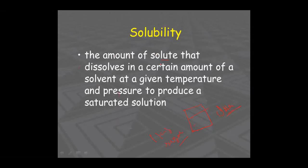The amount of solute that dissolves in a certain amount of solvent at a given temperature and pressure to produce a saturated solution: for example, adding one kg of sugar to one liter of water. Whatever amount of solute fully dissolves in that certain amount of solvent at room temperature gives you the solubility — and that is a saturated solution.